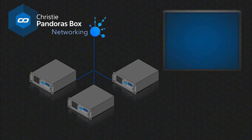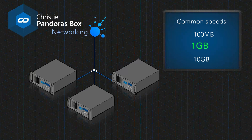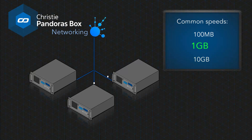Computer networks can have different speeds. Common speeds nowadays are 100 megabits, 1 gigabit, and 10 gigabit. We recommend using at least a 1 gigabit network so that media can be transferred quickly. 10 gigabit equipment may be more expensive but offers higher speeds. Make sure all devices support at least 1 gigabit; otherwise, the smallest device may pose a bottleneck for the rest of the machines.